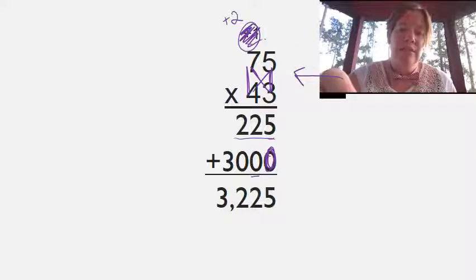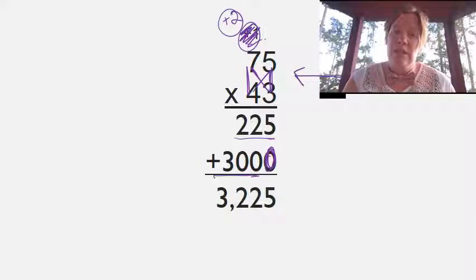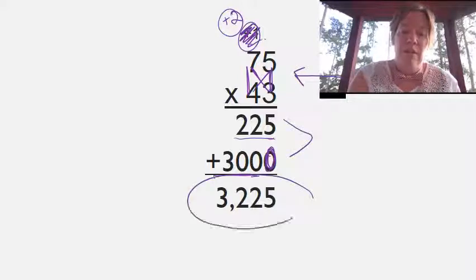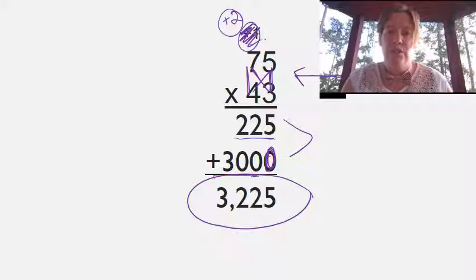Four times seven is twenty-eight, plus two is thirty. So my other partial product is three thousand. Then I know all I need to do is add my two partial products to get my final product of three thousand two hundred twenty-five.